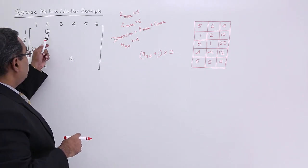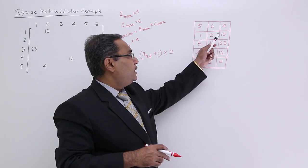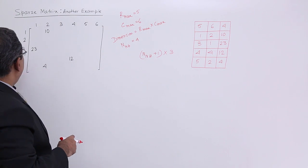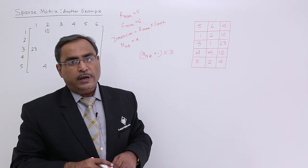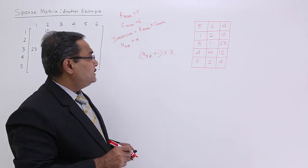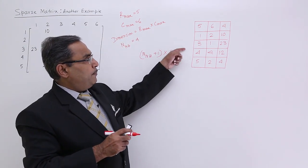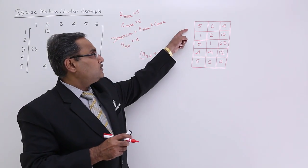Row number 1 column number 2 data is 10, 1, 2, 10 and the next one 3, 1, 23. So, 3, 1, 23 in this way I did the rest. What is the total size? That is number of non-zero data 4 plus 1.